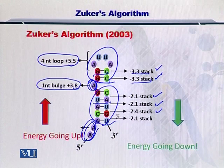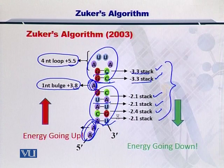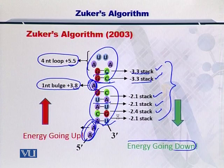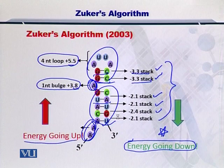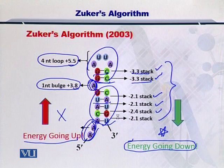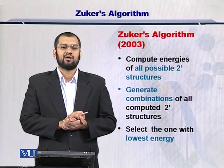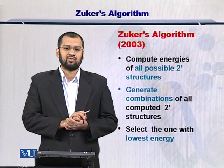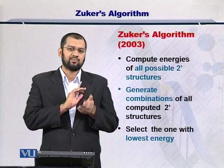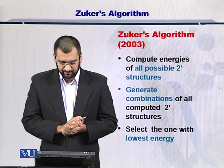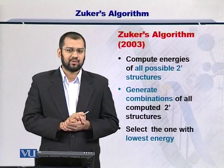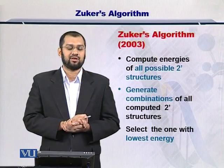So essentially, what you are going to do is add them up. Note that as a result of the stacking interactions, the overall energy of the molecule is going down — that is good. As a result of the uncoupled nucleotides, the energy is going up — which is bad. You add them all up and arrive at a value for the entire structure. You have now computed the energy of the overall molecule, and you can do it for all possible secondary structure combinations that can exist. You will then select the RNA secondary structure with the lowest energy, or most negative value.